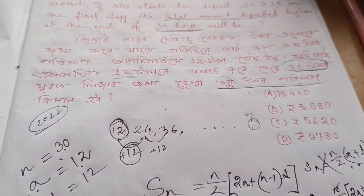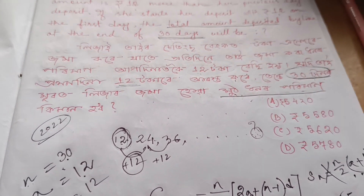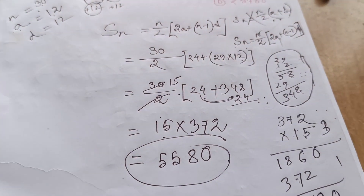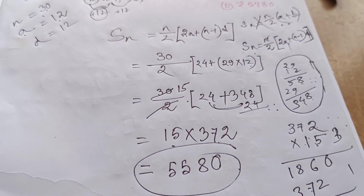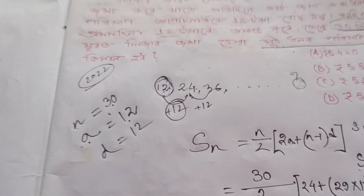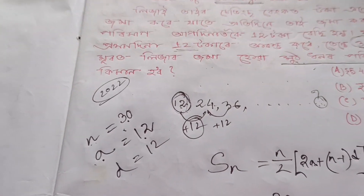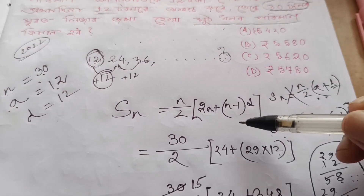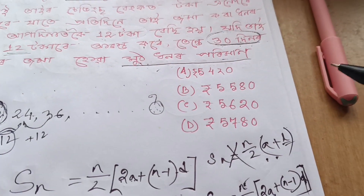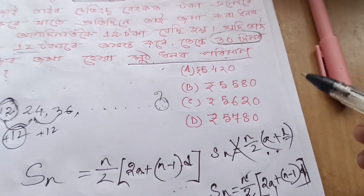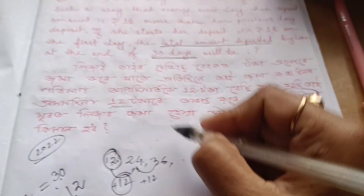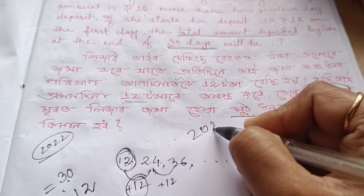The answer is 5580, that is the arithmetic progression. The formula option is correct — the answer is option 5, which is the correct answer.